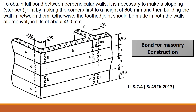Regarding the bond for masonry construction, bricks are laid in courses but between the courses there should be no continuity of the vertical joint. To obtain the full bond between perpendicular walls, it is necessary to make a sloping stepped joint by making the corners first — up to a height of 600 mm, at least one and a half courses — and then building the wall in between. Otherwise, a toothed joint should be made in both walls alternatively in lifts of about 450 mm. This construction method is defined by clause 8.2.4 of IS 4326.